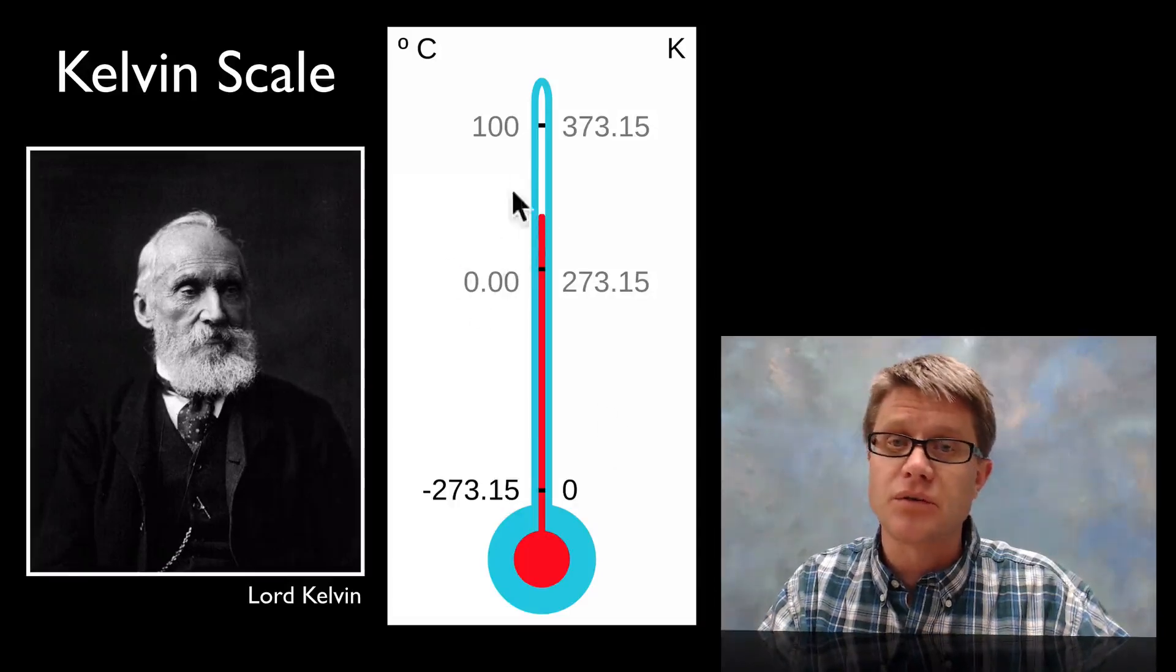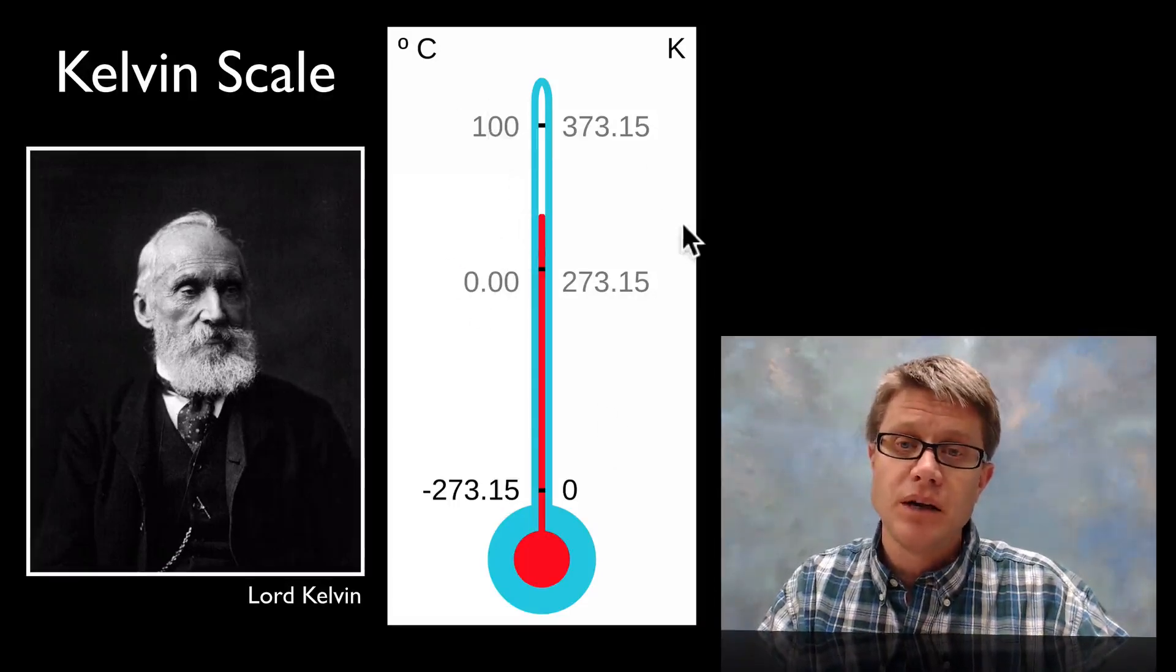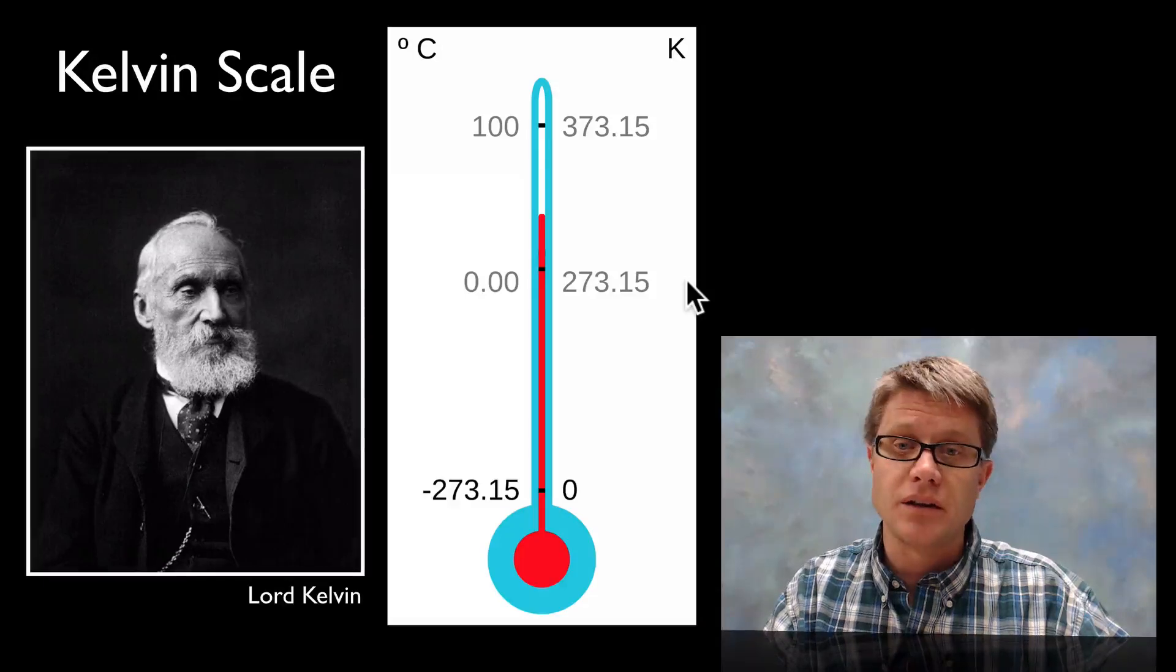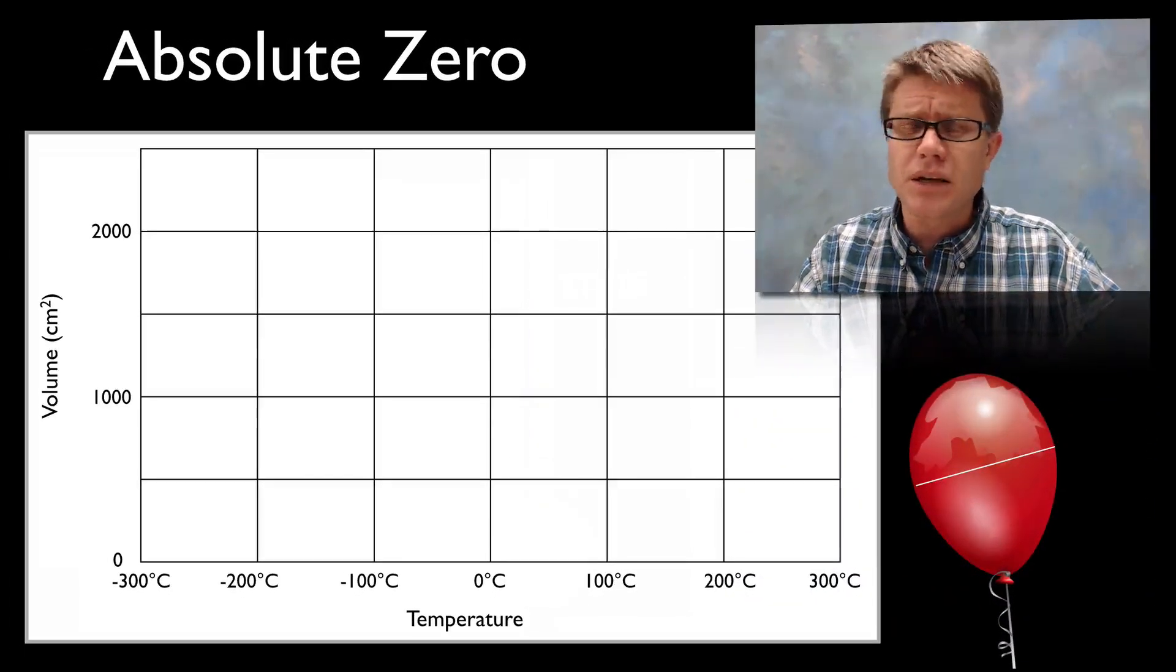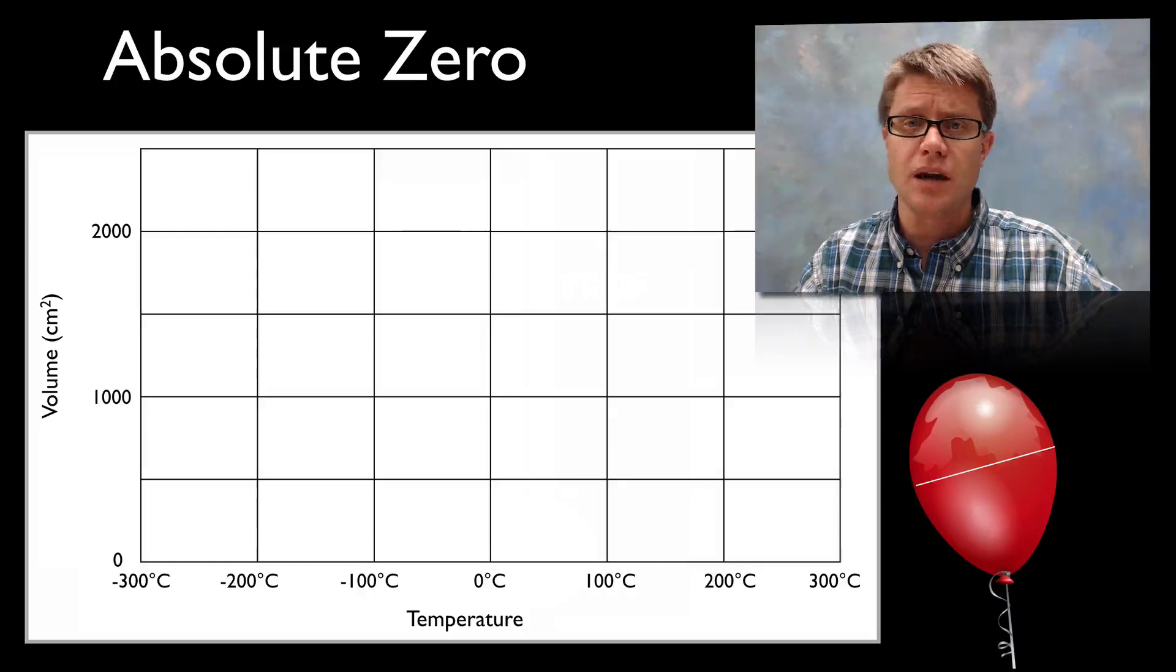Celsius was set up where zero is going to be freezing. A hundred is going to be boiling. And so you can see how they kind of correspond in this right here. And so we could even calculate absolute zero in the chemistry lab. How would you do that?